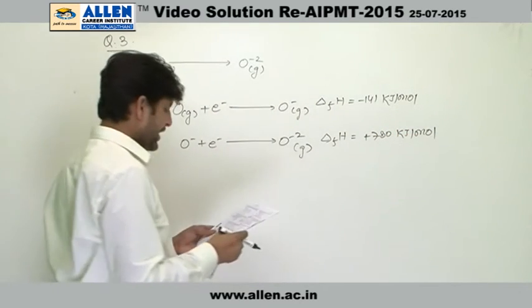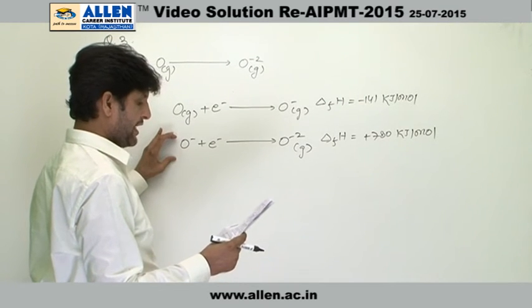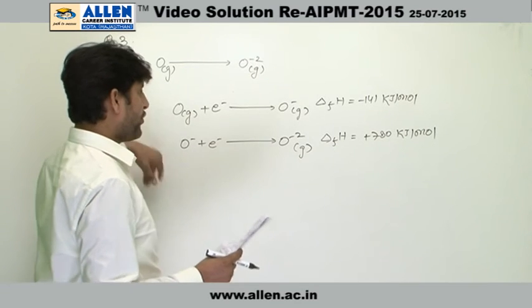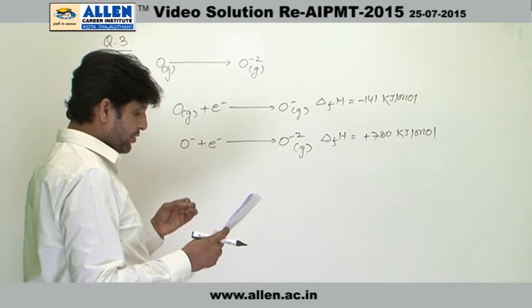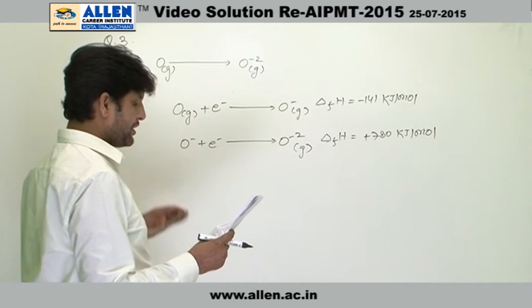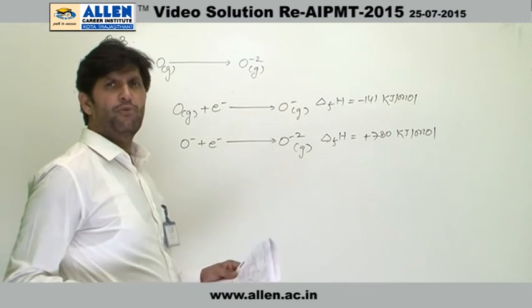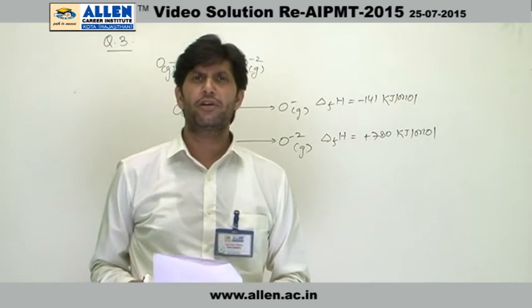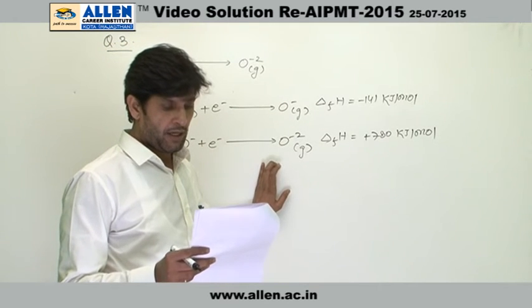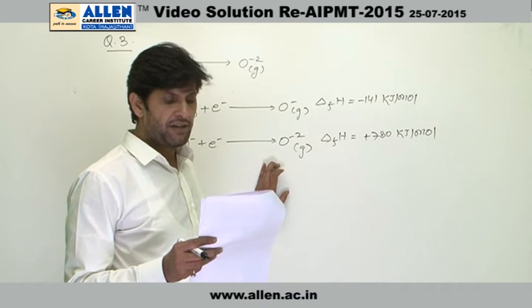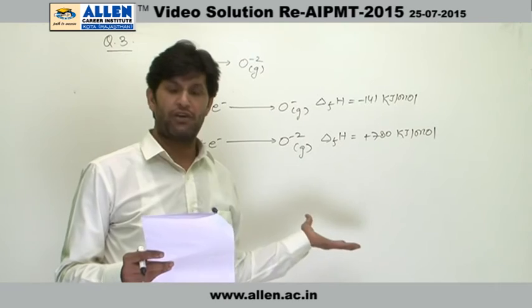Question is stating us that first step is exothermic, second step is endothermic, overall process is endothermic. Now, the question is - is it due to the fact oxygen is more electronegative? No doubt it is more electronegative, but it is not the reason for this process being endothermic. Addition of electron in oxygen atom results in larger size of ion. This statement is correct, but it is not the answer.